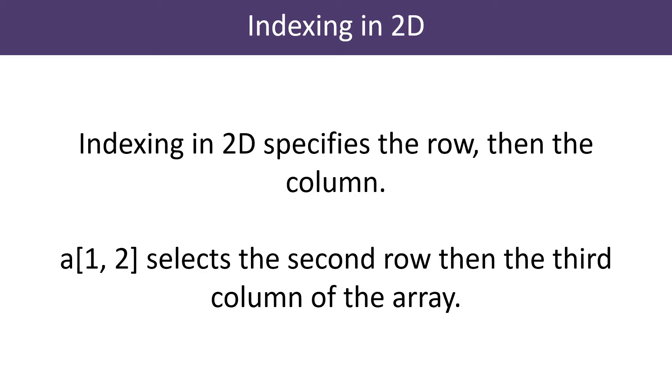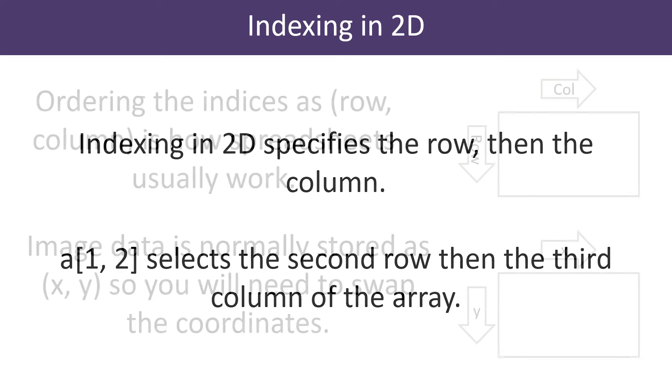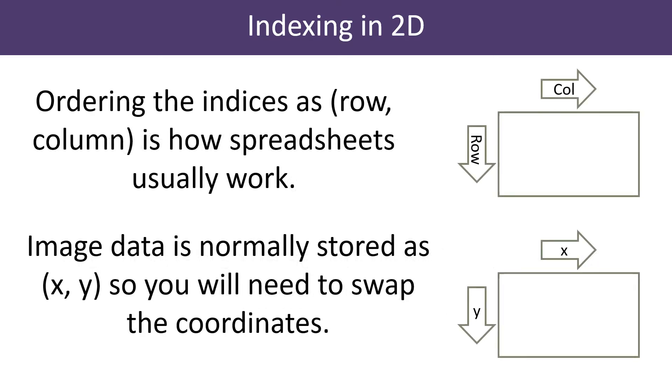Notice that the two values are both enclosed within the square brackets, separated by a comma. The row and column ordering used by NumPy is the same scheme that spreadsheets normally use. That works well if the NumPy array is storing row and column data.